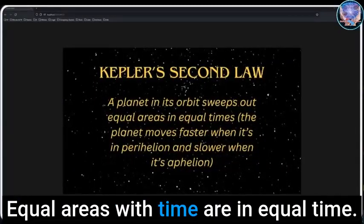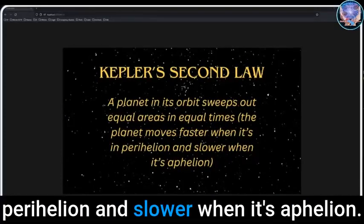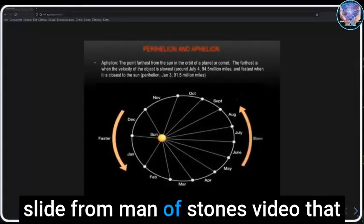Now for the second law, we have: a planet in its orbit sweeps out equal areas in equal time. Planets move faster when it's in perihelion and slower when it's aphelion.